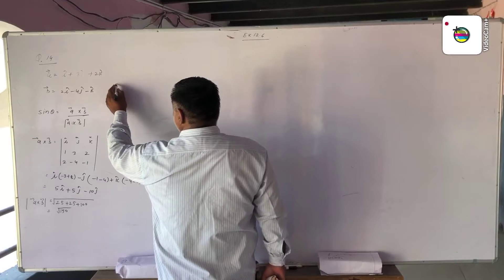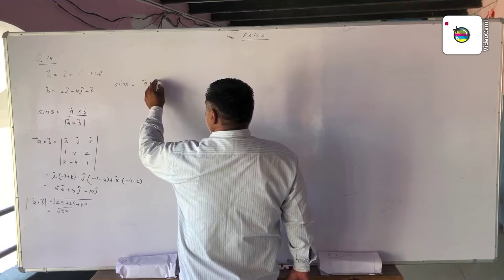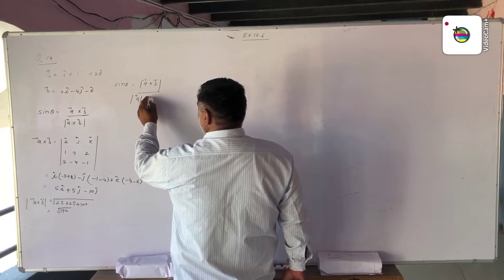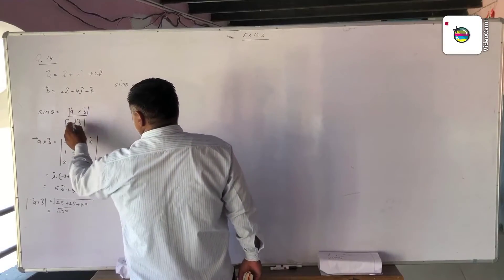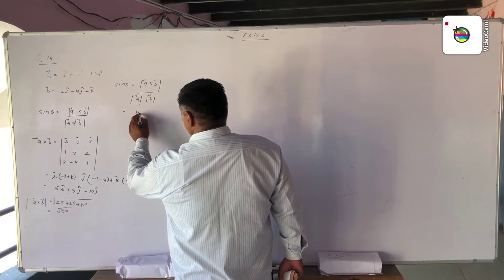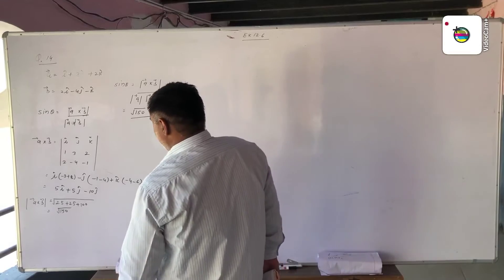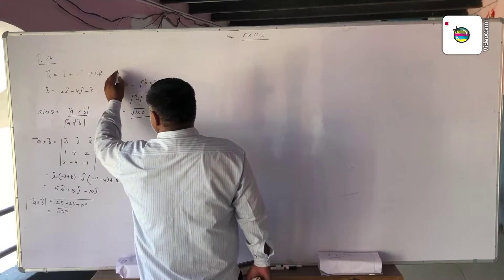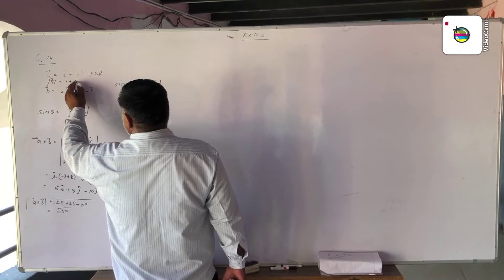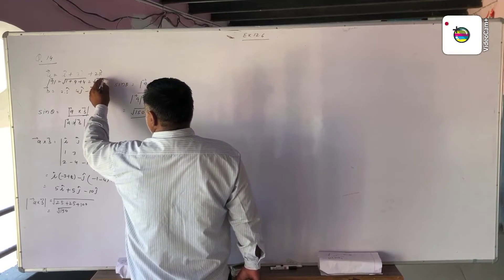Sine theta equals the magnitude of A cross B divided by the magnitude of A multiplied by the magnitude of B. The magnitude of A cross B is the square root of 150. The magnitude of vector A is the square root of 1 squared plus 3 squared plus 2 squared, which gives us the square root of 14.